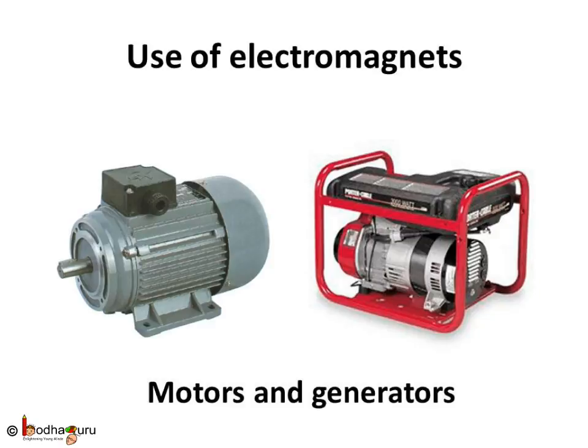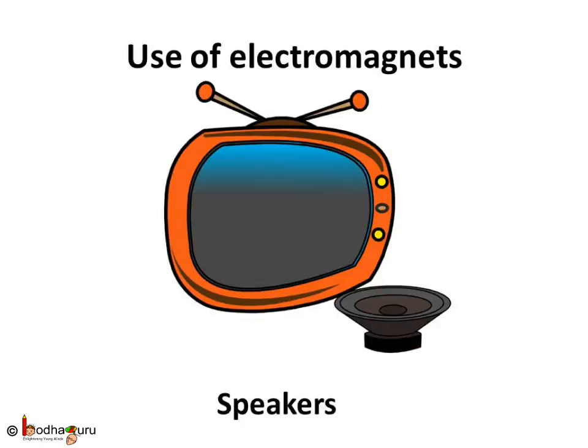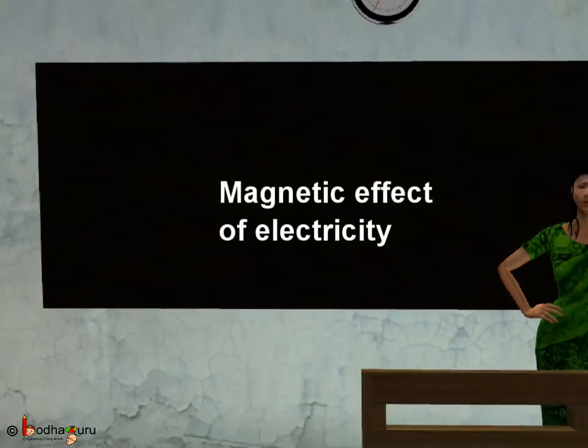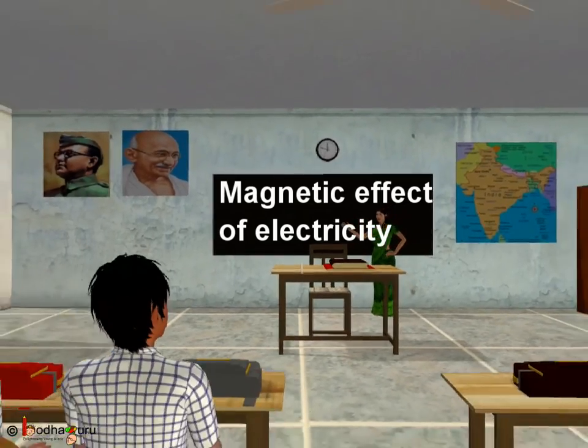Today, the electromagnets are used in many devices like the motors, generators, cranes to separate magnetic materials from the junk, children's toys, electric bell, speakers in the radio TV etc. Here, we conclude our lesson for today. See you in the next class. Bye Bye Kids!